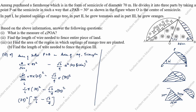Now substituting values: 35² equals 1225. So we have (1225/12) × (2π minus 3√3). Using π equals 3.14 and √3 equals 1.732: 2 × 3.14 equals 6.28, and 3 × 1.732 equals 5.196. So 6.28 minus 5.196 equals 1.084.